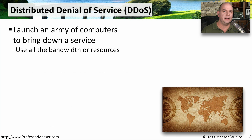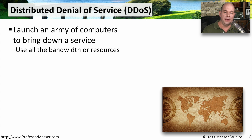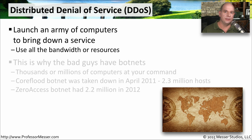A distributed denial of service means that the denial of service takes place from many different locations. You have a large army of devices, and they are all descending on one location at one time, using up all of your bandwidth or all of the resources for that service.